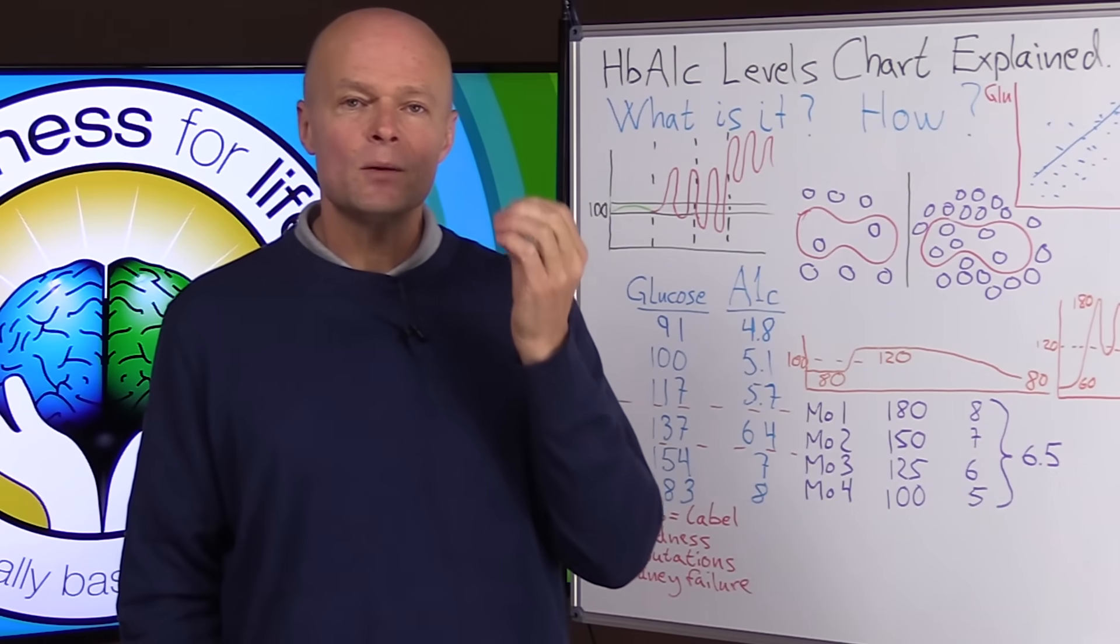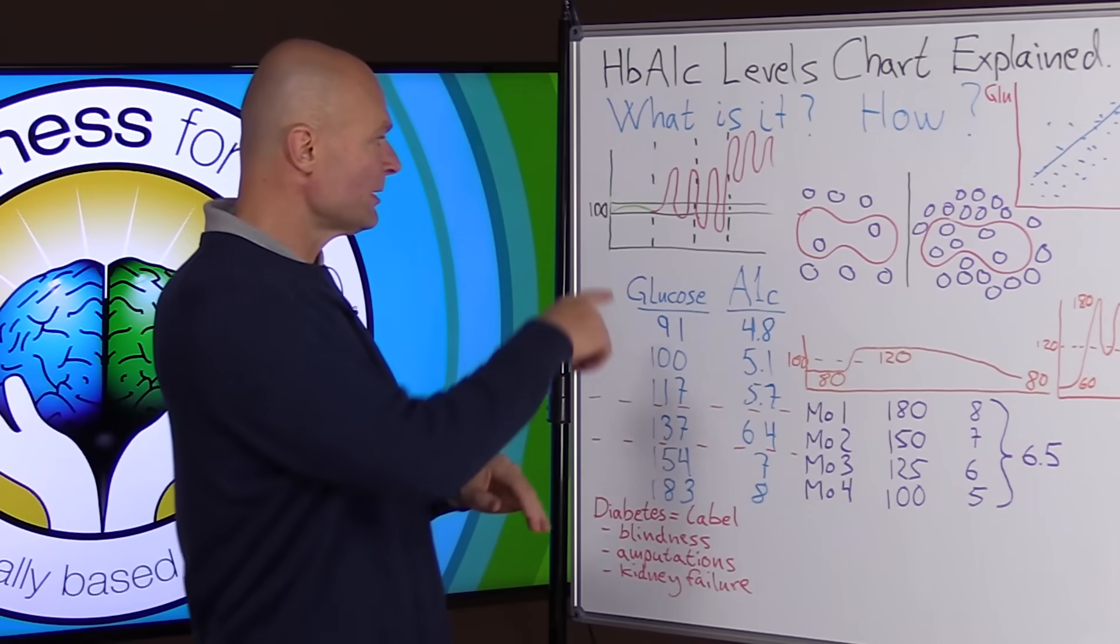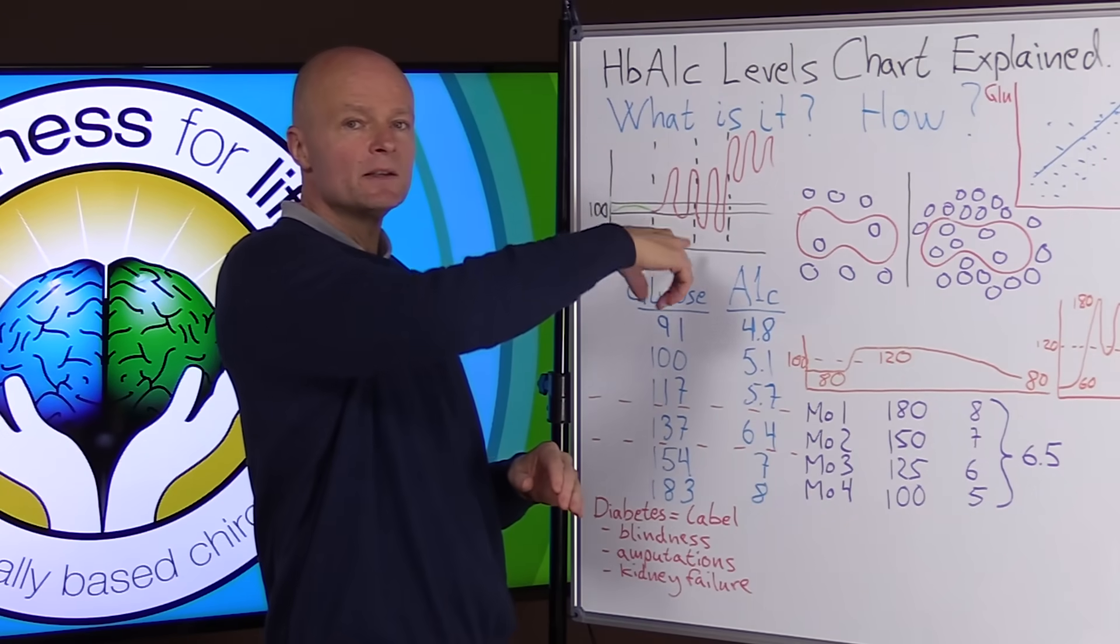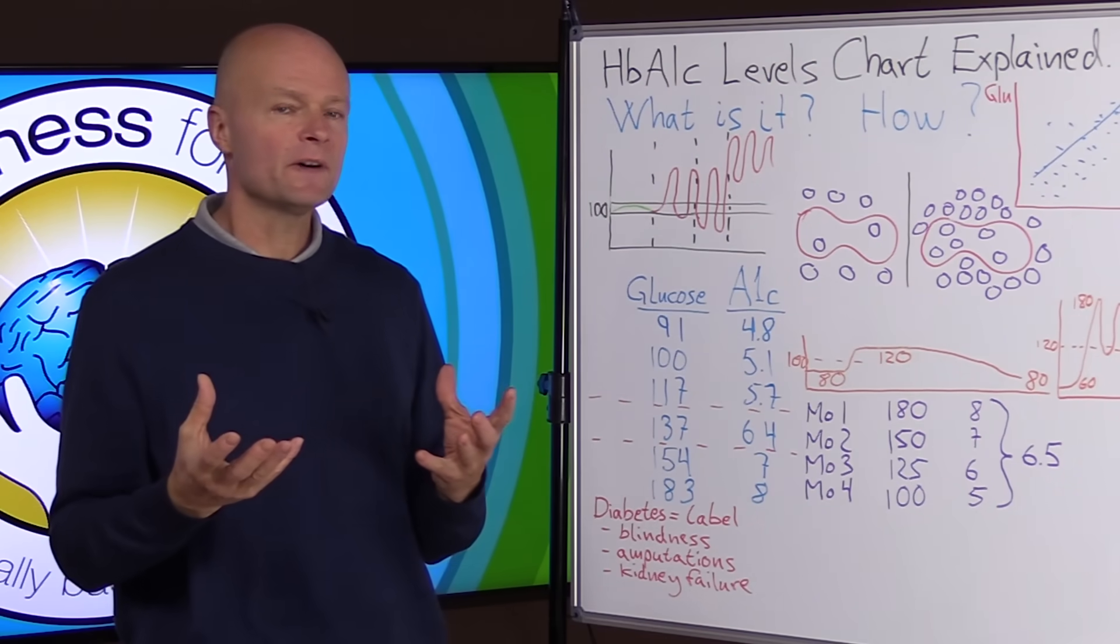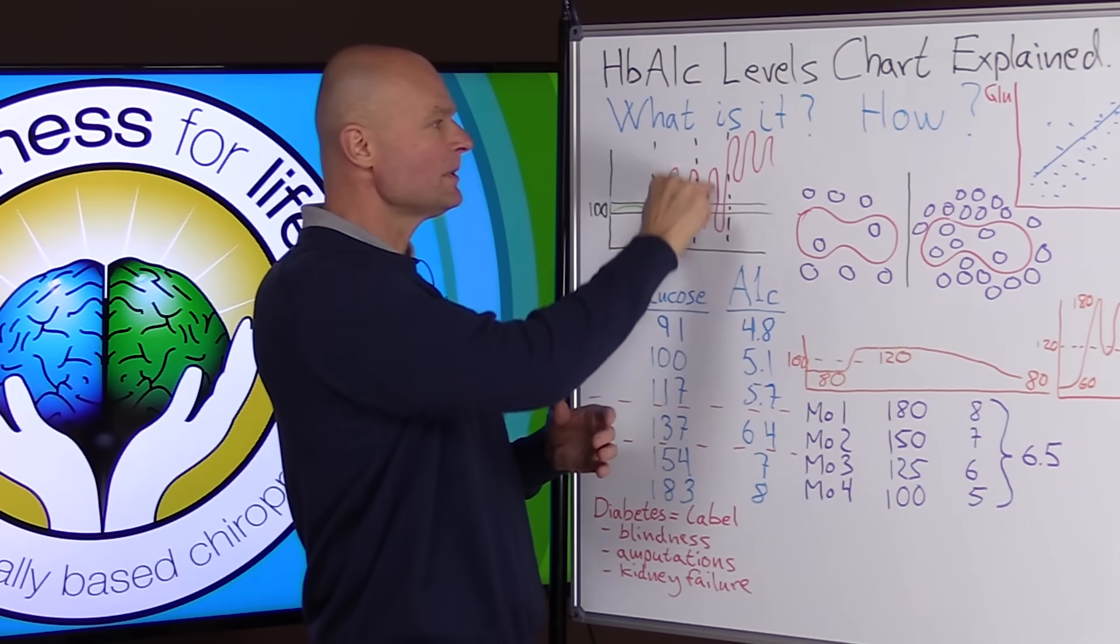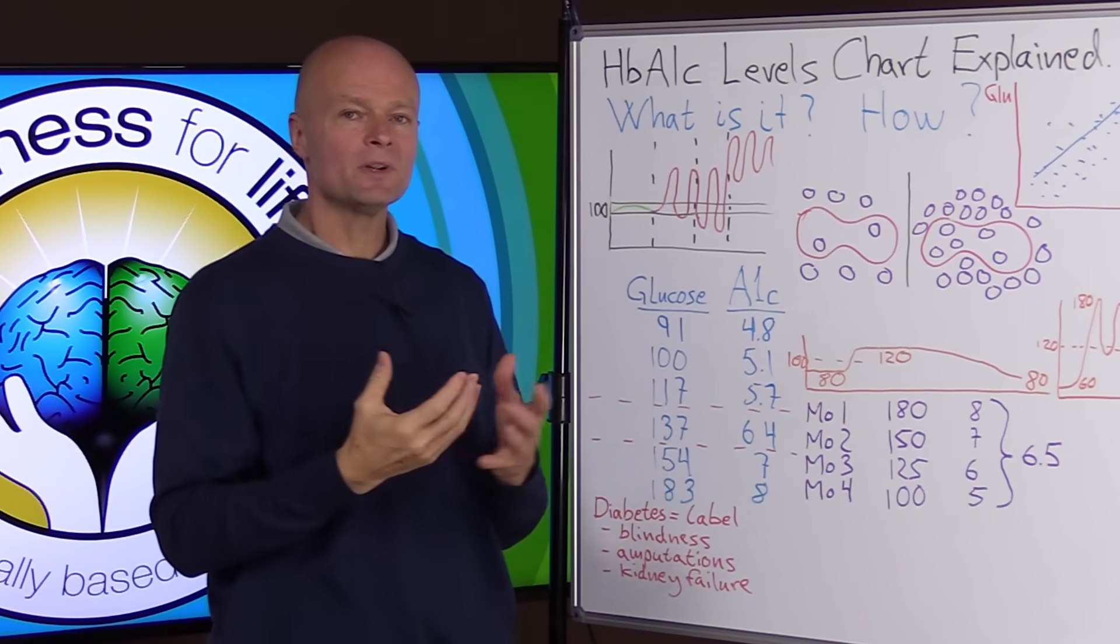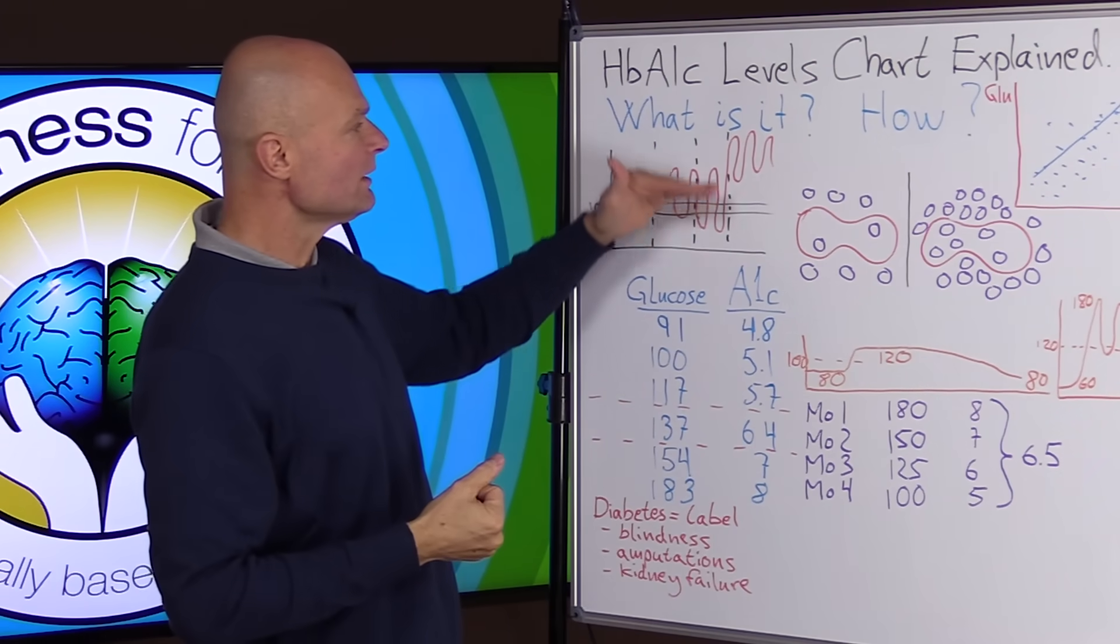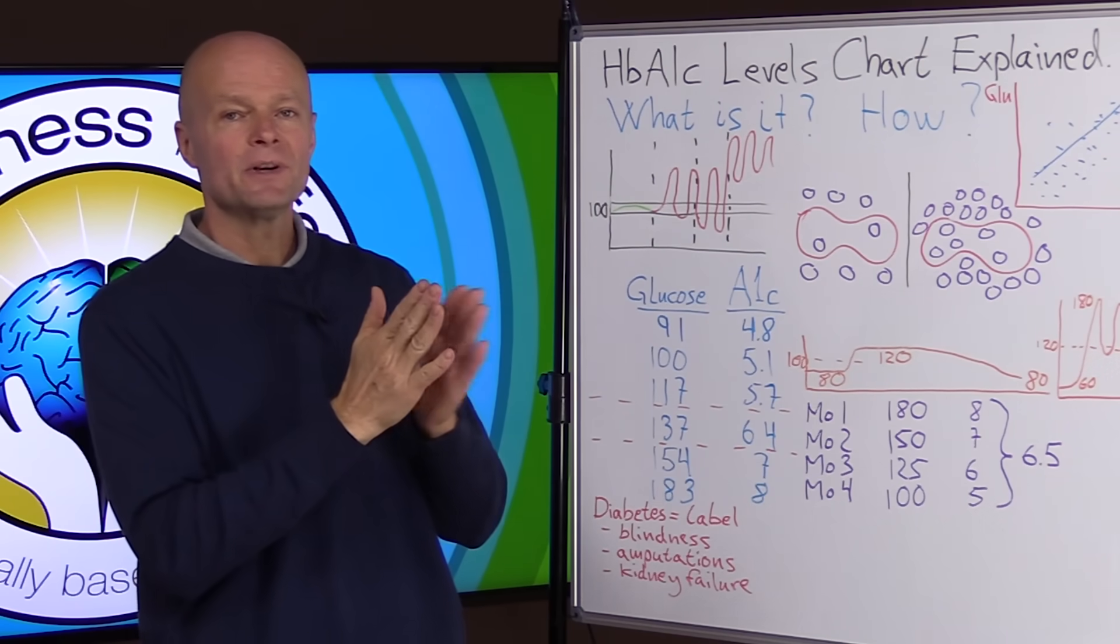So first of all, why is A1c measured? Well blood sugar is important but blood sugar can fluctuate tremendously especially with a diet of refined foods. So if you measure something at a certain time then you could get a very different reading depending on the time you pick. So measuring glucose is difficult because it changes by the hour or even by the minute.